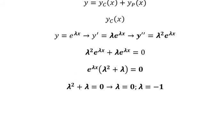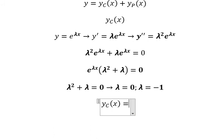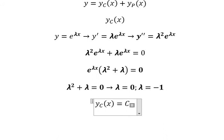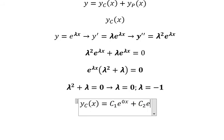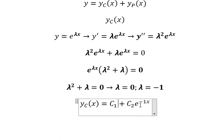So for y_c, we write: y_c equals c1 times e to the power of 0·x plus c2 times e to the power of negative x. Since e to the power of zero is 1, this simplifies to y_c equals c1 plus c2 e to the power of negative x.